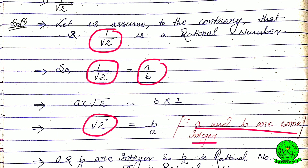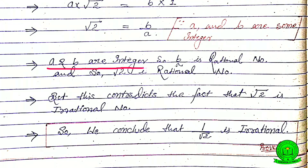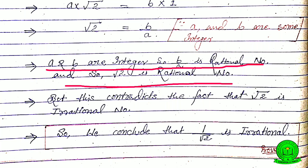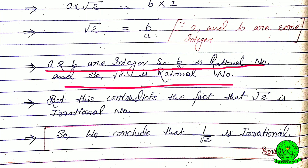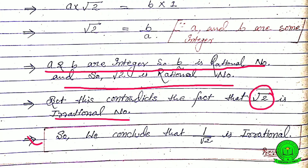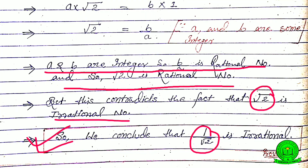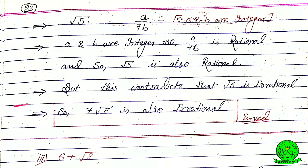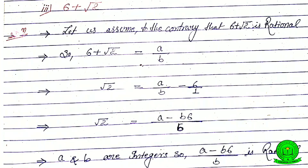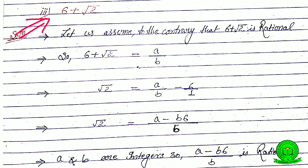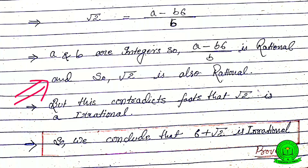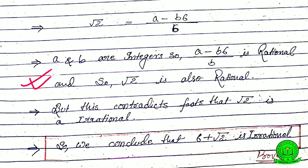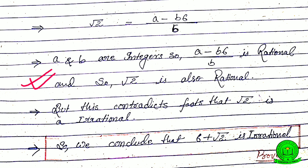Since a and b are integers, b divided by a is a rational number, meaning root 2 would be rational. But this contradicts the fact that root 2 is irrational. Therefore 1 by root 2 is an irrational number. Questions (ii) and (iii) follow the same method — you can take a screenshot of the solutions shown on screen.